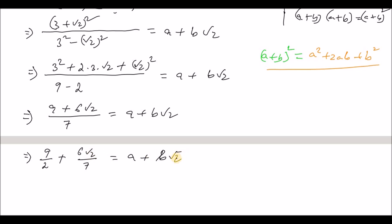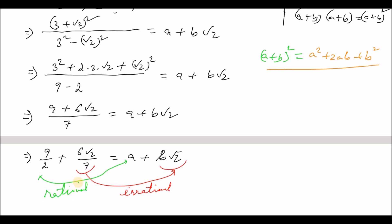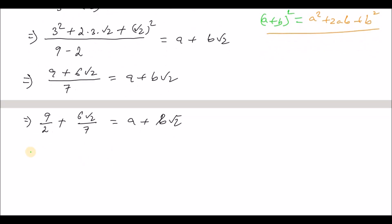Now we compare the rational part and the irrational part. On the left-hand side and right-hand side, the rational part equals the rational part, and the irrational part equals the irrational part. Comparing rational parts: a equals 9 over 7. So a equals 9 by 7.